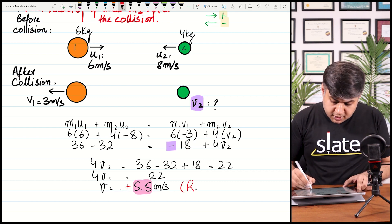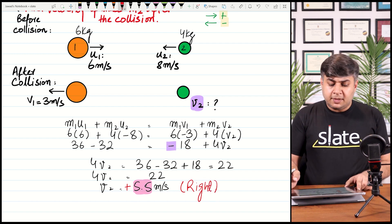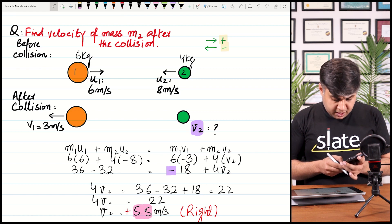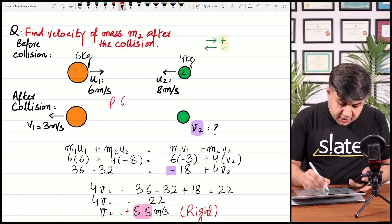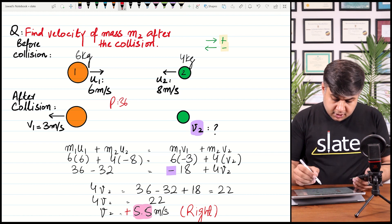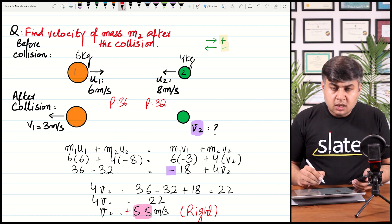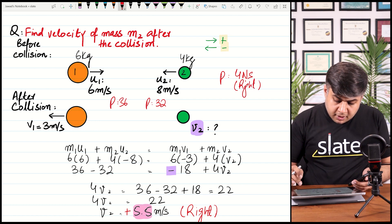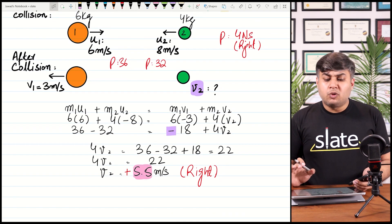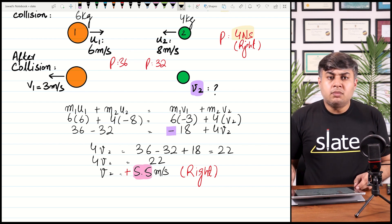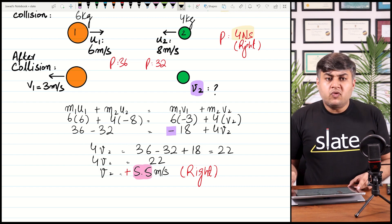So 4V2 = 36 − 32 + 18 = 22, therefore V2 = 22 ÷ 4 = 5.5 meters per second. The answer came with a positive sign, which shows that this ball will move towards the right-hand side after collision. To verify: ball 1's initial momentum is 6 × 6 = 36 Newton-seconds, and ball 2's momentum is 4 × 8 = 32 Newton-seconds. The net momentum before collision is 36 − 32 = 4 Newton-seconds towards the right. After collision, the net momentum is also 4 Newton-seconds towards the right — so momentum is conserved before and after collision.